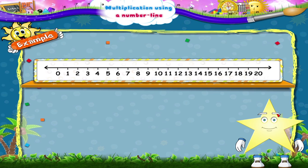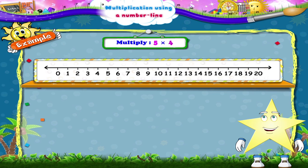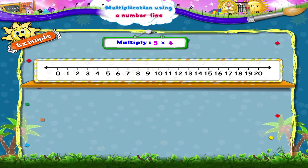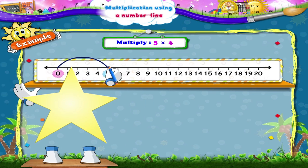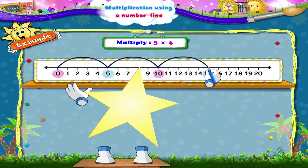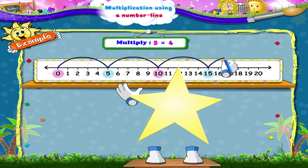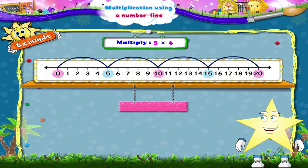Here's the last one Starry. Solve five multiplied by four. Yes, we shall go from zero to the number five, then move to 10, 15, and in the end we reach the number 20. So five multiplied by four is equal to 20.